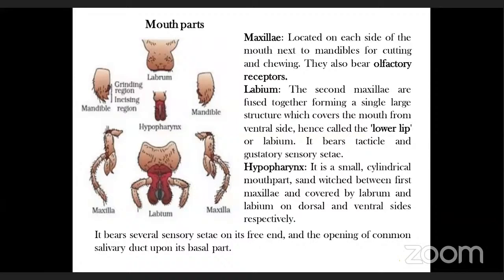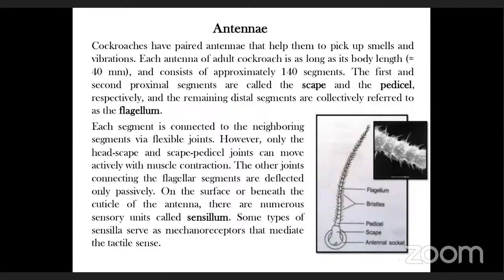Cockroaches have paired antennae that help them pick up smell and vibration. They are responsible for olfaction and also pick up vibrations from the ground. Each antenna of an adult cockroach is as long as the body and consists of approximately 140 segments. The first segment is called scape, the second is pedicel, and after the pedicel a large wave-like flagellum arises. The very first segment of the flagellum is called post-pedicel.